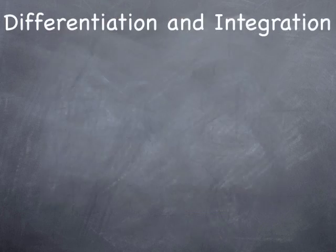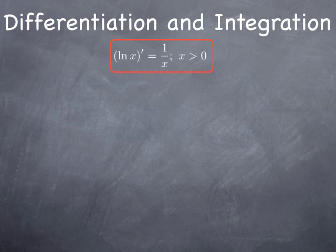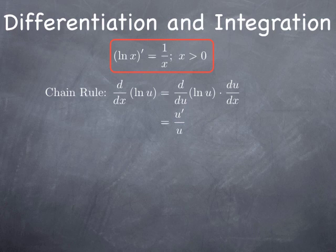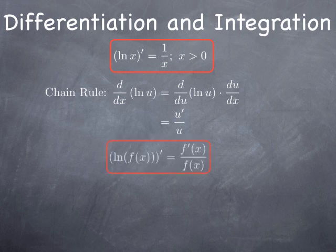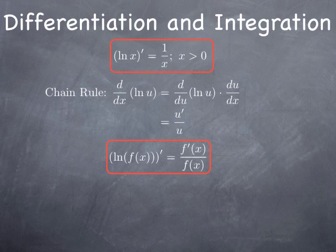Going back to calculus, we look at differentiation and integration for functions involving natural log. We know the derivative of ln(x) is 1/x for x positive. Applying the chain rule to ln(u), where u is a function of x, we differentiate with respect to u and multiply by the derivative of u with respect to x. Since the derivative of ln(u) with respect to u is 1/u, we obtain u′/u. In standard form: if f(x) is inside the natural log, differentiating gives f′/f.